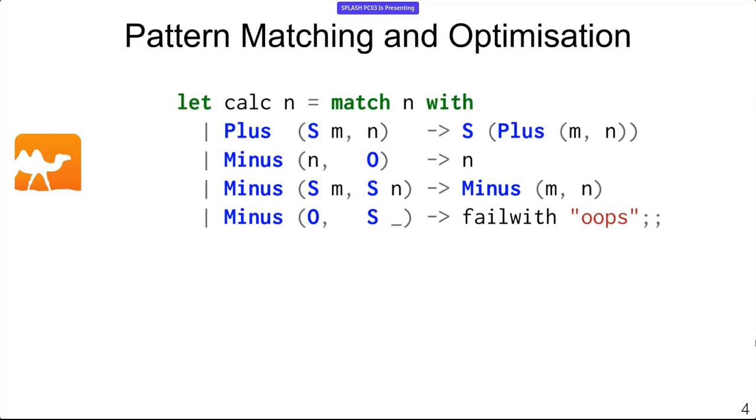Let me give you a bit of background on traditional functional programming pattern matching and its optimization. Here we have an OCaml program that defines a function calc which has an argument n, and it's going to pattern match on this argument n. It has four different branches with different patterns, and the pattern matches on this algebraic data type, this tree-shaped structure, using constructor names and variables to match subtrees. The first pattern will see if n contains a plus constructor with two children, and if the first child is an S constructor, it will bind the child of S to m and the second child of plus to n, and these are both fresh names.